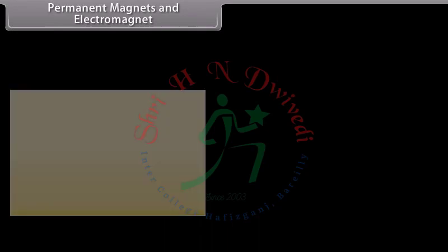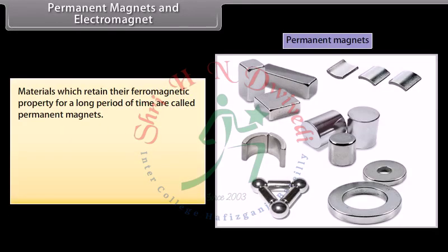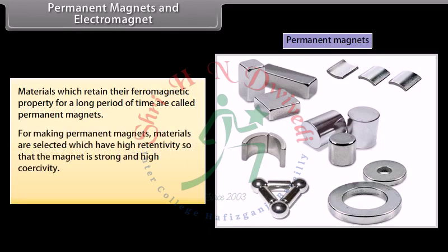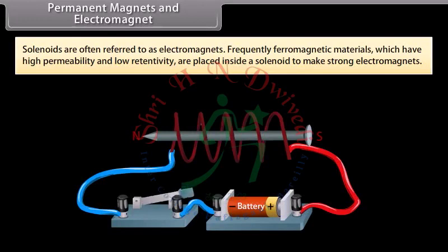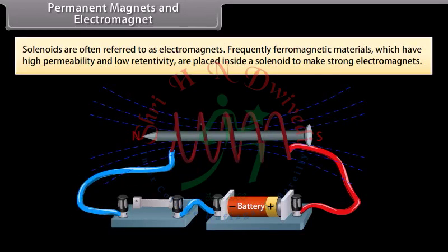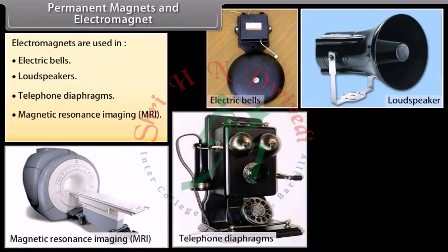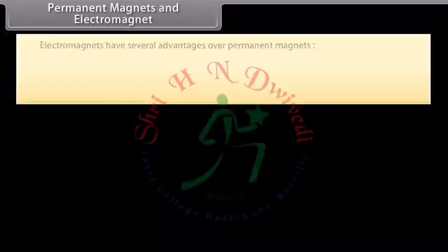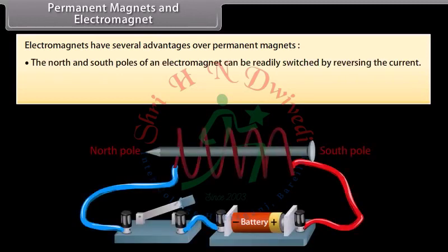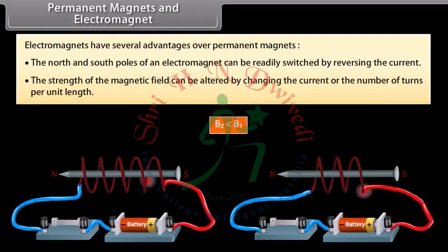Permanent magnets and electromagnets: Materials which retain their ferromagnetic property for a long period of time are called permanent magnets. For permanent magnets, materials with high retentivity and high coercivity are selected. Solenoids are often referred to as electromagnets. Ferromagnetic materials with high permeability and low retentivity are placed inside a solenoid to make strong electromagnets. Electromagnets are used in electric bells, loudspeakers, telephone diaphragms, magnetic resonance imaging (MRI), and cranes to lift heavy materials. Electromagnets have advantages over permanent magnets: north and south poles can be switched by reversing the current, and field strength can be altered by changing the current or number of turns per unit length.